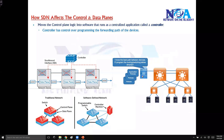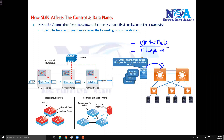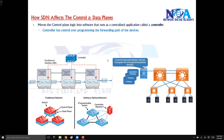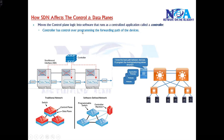The controller will program the forwarding paths and tell which suitable path to use so that a packet can reach from source A to destination B. The controller can instruct devices to use a specific route, change an existing route, or even remove a particular route. So the control plane logic resides on the controller, and the data plane still resides on the networking devices.